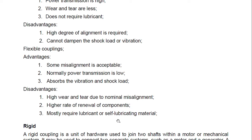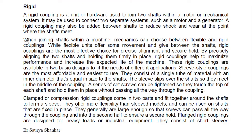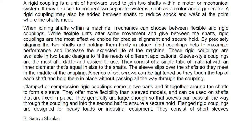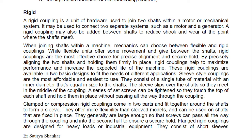A rigid coupling is a unit of hardware used to join two shafts within a motor or mechanical system. It may be used to connect two separate systems such as a motor and a generator. A rigid coupling may also be added between shafts to reduce shock and wear at the point where the shafts meet. Rigid couplings are the most effective choice for precise alignment and secure hold, helping to maximize performance and increase the expected life of the machine.